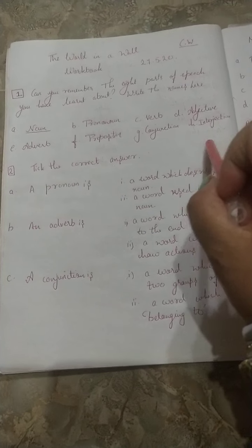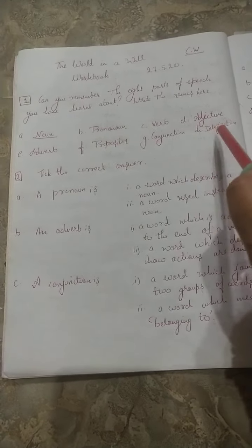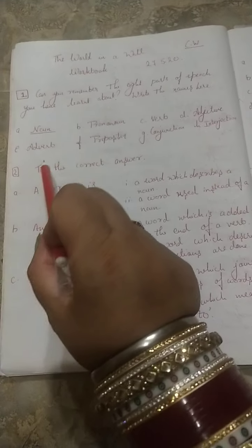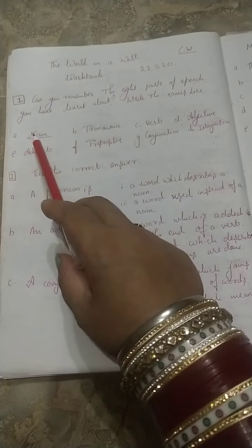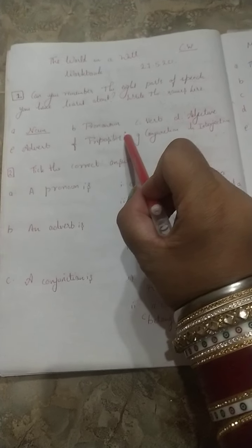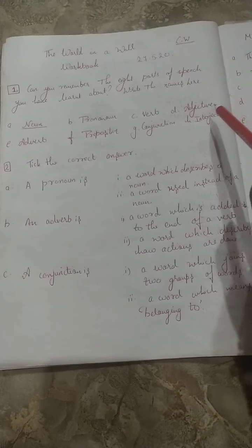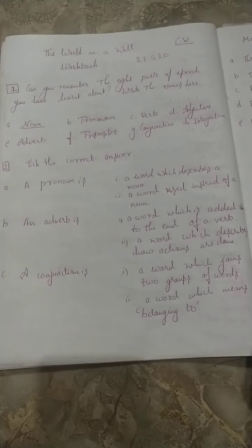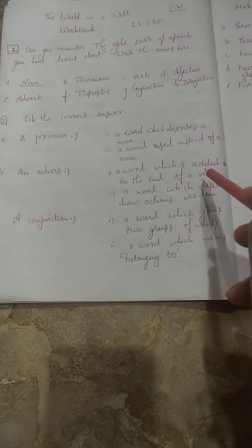You have to write the names in the book. The first blank is done — as you have to write the names. Then, tick the correct answer.